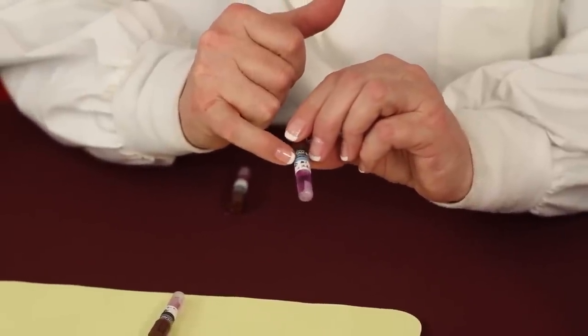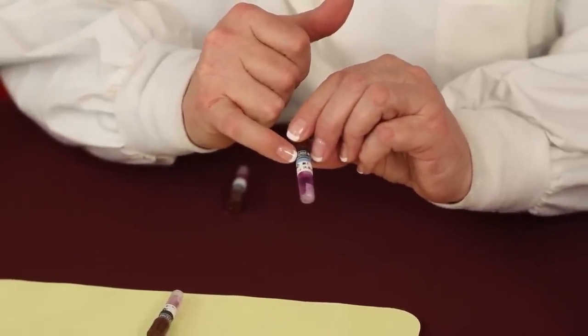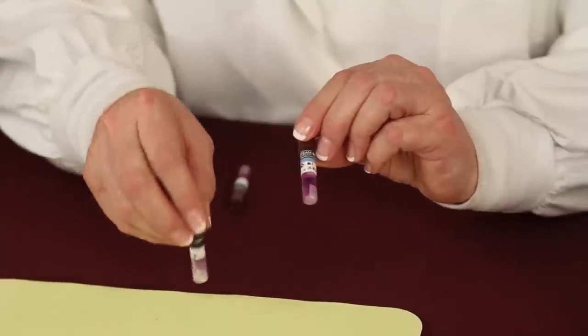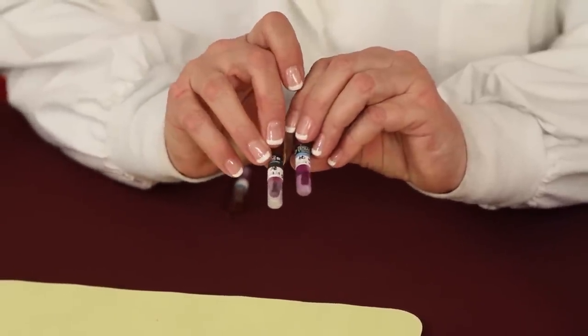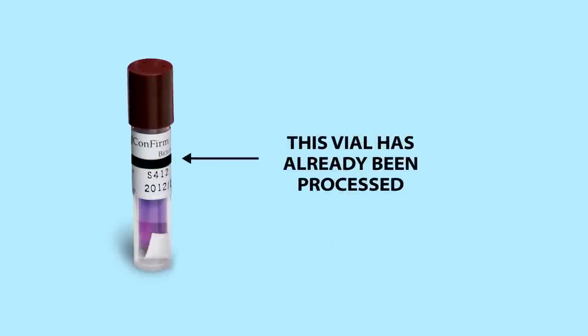When you have the biological monitoring vial, I want you to note that there is a strip, a colored strip on the outside. This is actually a chemical indicator that's used as a process indicator because at the end of the sterilization cycle, that blue line should turn black, which means that this vial has already been processed.